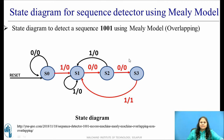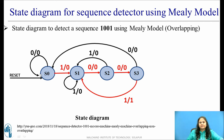If the fourth bit received is also 0, it means we have to start from the first bit of the sequence again, so there is a state transition to the initial state S0. In S3, if the incoming bit is 0, it will move back to the initial state and wait for the first bit 1 again. This is how the state diagram for the sequence 1001 is obtained for the Mealy model.